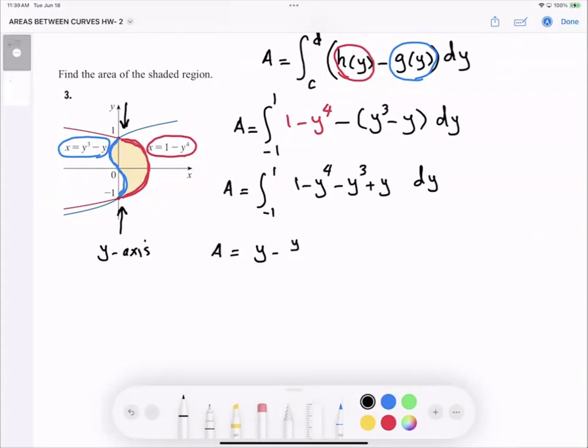The antiderivative includes y squared divided by 2. Now plug in negative 1, plug in 1, and do the calculation.